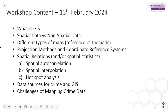Today we'll be discussing some of the major concepts with GIS and spatial data. We'll start by discussing what exactly GIS is, look at the differences between spatial and non-spatial data, talk about different types of maps — specifically the differences between reference and thematic maps — then move on to discussing projection methods and coordinate reference systems, and have a brief discussion about spatial relations and spatial statistics. Lastly, I'll provide resources for crime data and hopefully discuss some of the challenges of mapping crime data.